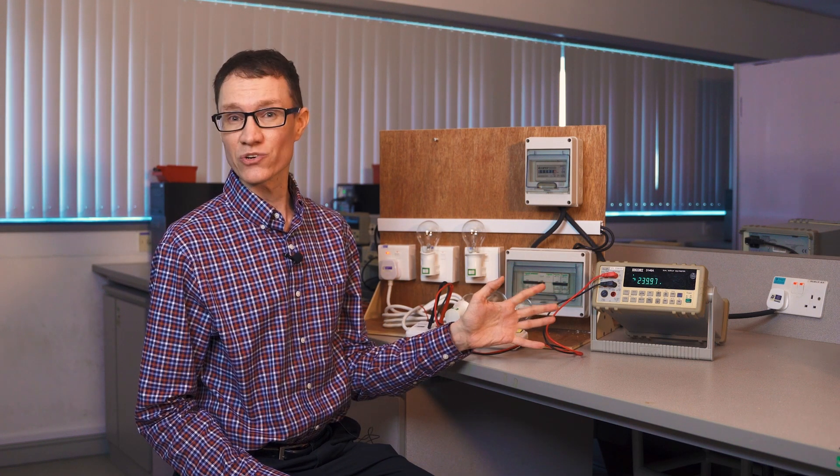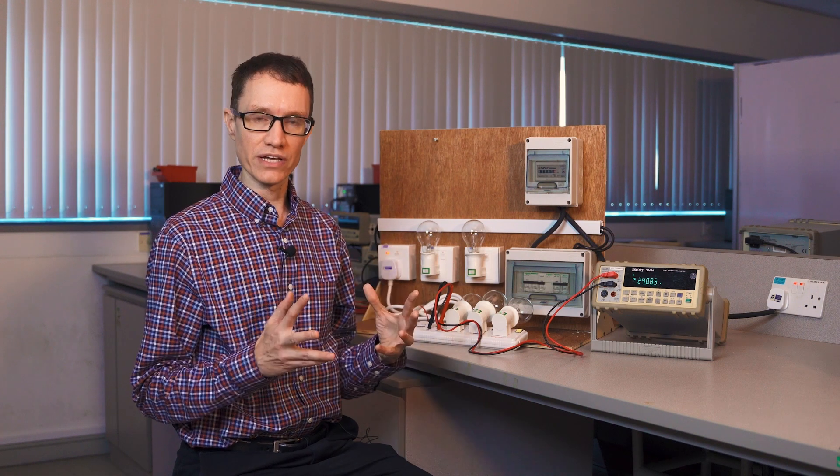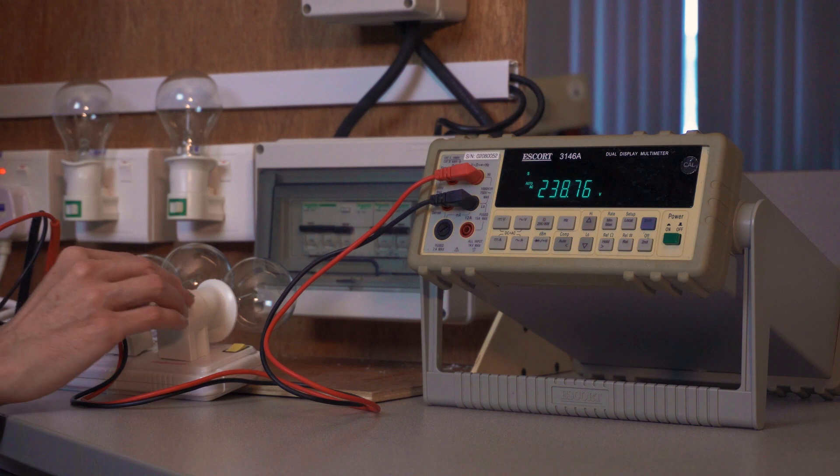What we're going to do in this video is turn these light bulbs on one by one and we're going to see if we notice any drop in the grid voltage. If we start loading down the electricity grid we should see the grid voltage start to fall. Let's get started.